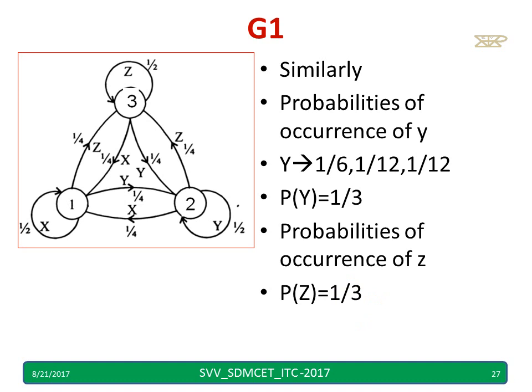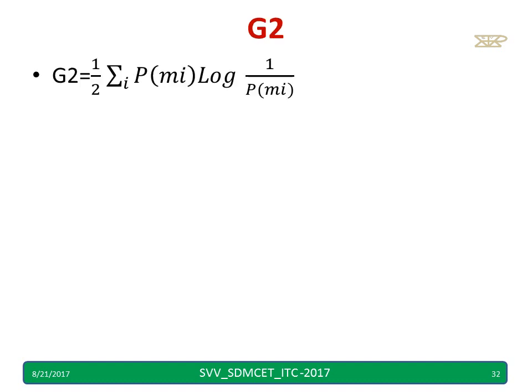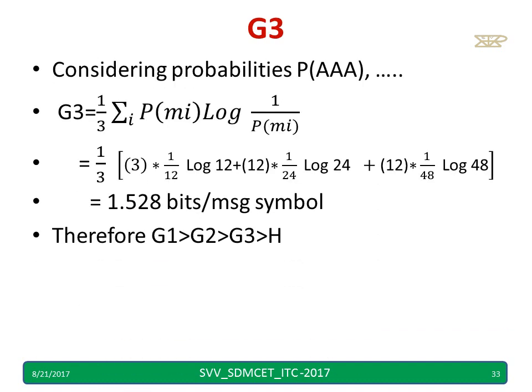Using the probabilities of X, Y, and Z, we can calculate G1. G1 equals 1.5, which matches H = 1.5. G2 was found to be 0.54. As N tends to infinity, Gn converges to H. In exams, they usually ask up to G3; G4, G5 will take more time to compute.